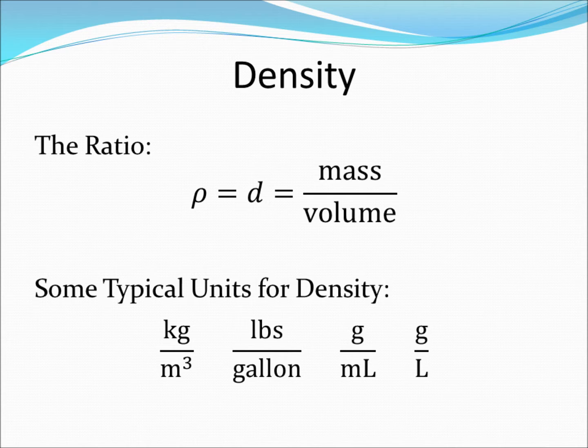Some typical units for density include kilograms per cubic meter, pounds per gallon, grams per milliliter, or grams per liter. Note that pounds per gallon is technically a force per volume unit, not a mass per unit volume.